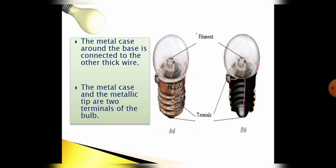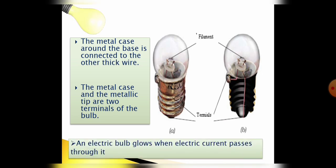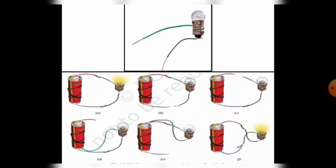When we fit it in a socket it completely makes a connection and with the help of current it is glowing. Now here you can see how we connect wires on both the terminals: metal case and metallic tip. And here in this picture you can also see the different arrangements.